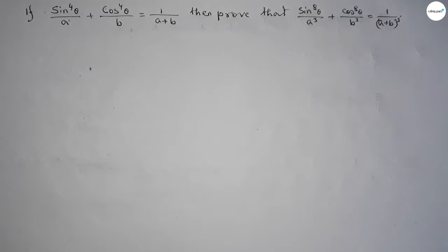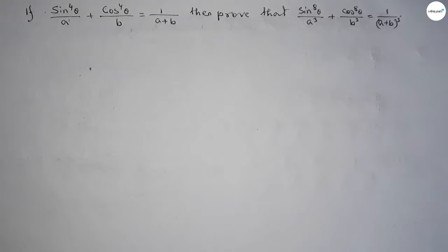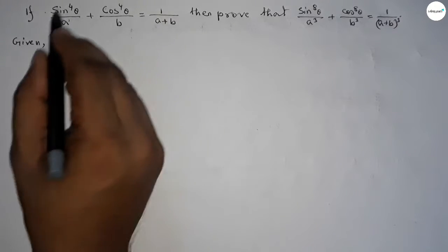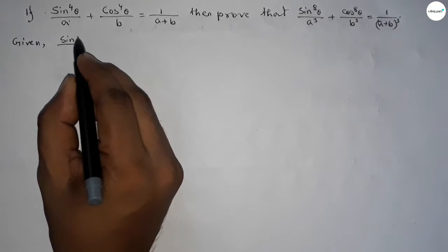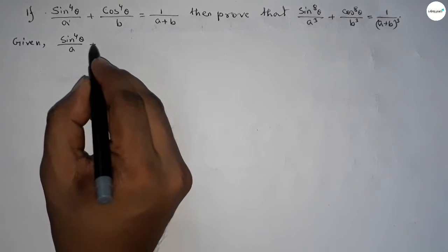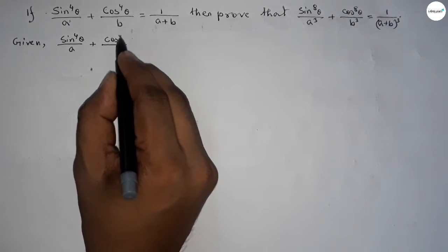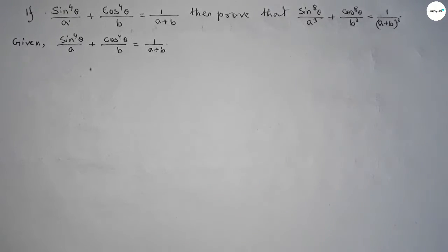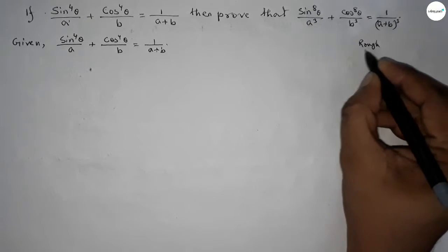This is a very important trigonometric math problem, so please watch the video till the end. Let's start. First of all, write down the given: sin⁴θ/a + cos⁴θ/b = 1/(a+b).